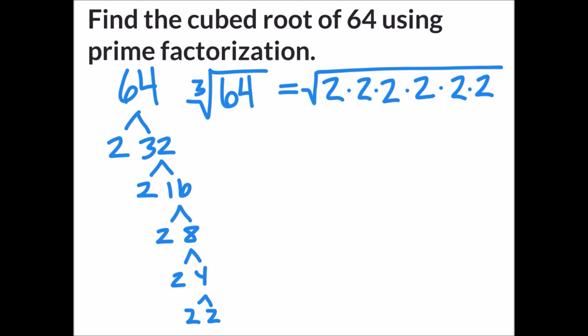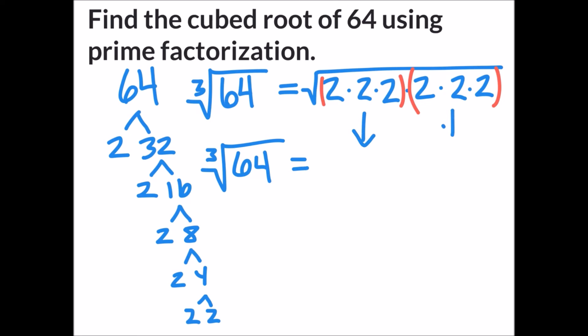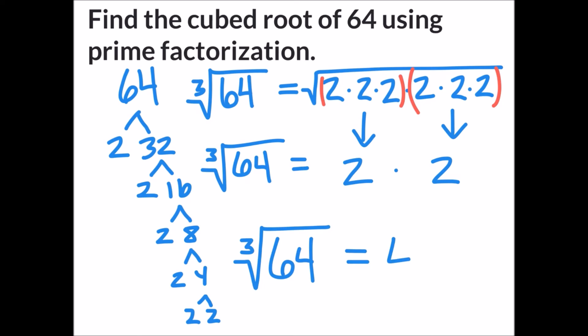Now we look at those numbers and see if we can make identical triplets — because we're looking at the cubed root. We get 2 times 2 times 2 as one triplet, and 2 times 2 times 2 as the other. We borrow one number from each triplet pair: 2 times 2, so the cubed root of 64 equals 4.